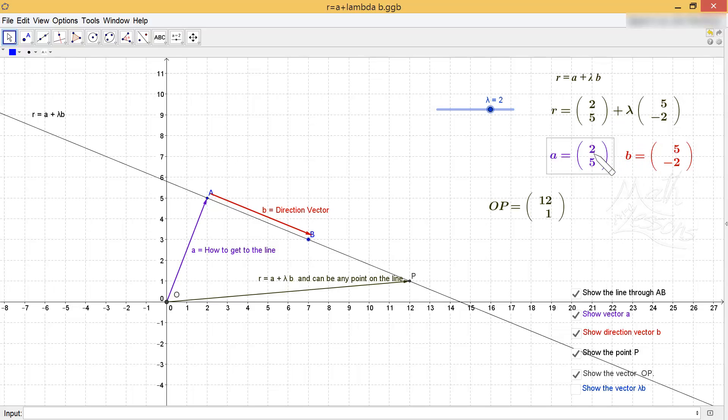So two lots of 5 is 10. Add on to 2 gives me 12. Two lots of -2 is -4. Add that to 5 gives me 1. And that shows you I can go from here, 12 along and 1 up, to get to OP.